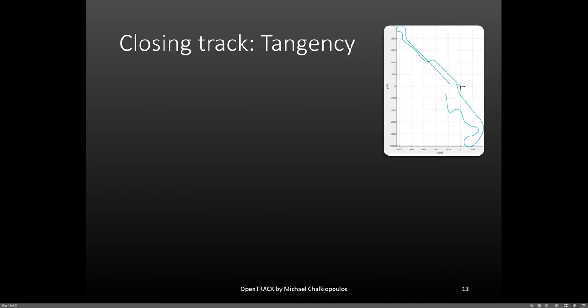Now, some of you may say, okay, so we can define a closed track, but how does OpenTrack actually close it? Well, this is done in two stages. First comes the tangency correction.